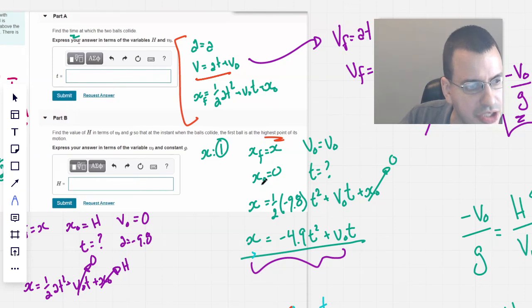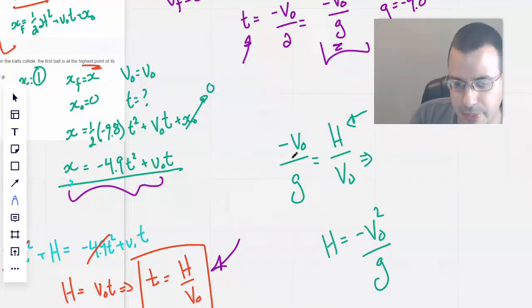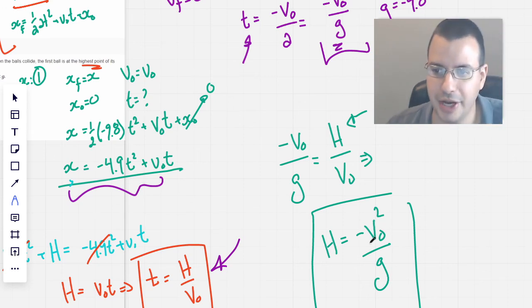Where g is considered to be a negative number. Yep, that's good there. Constant g. So the answer to the second part, the height, will be negative V0 squared over g. Hope that helped. See you next time.